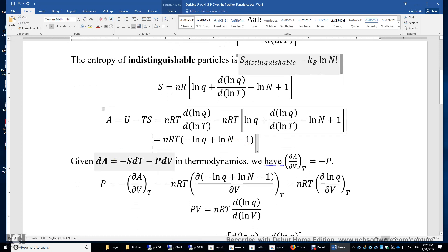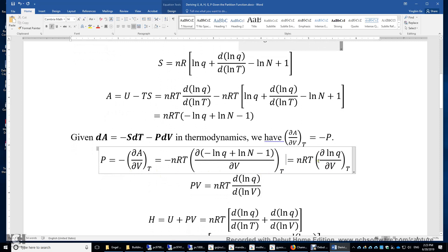Now we derive the pressure P of the system. Because dA equals negative SdT minus PdV solely from the definition of A and U and the exact differential form of U, we have delta A over delta V equals negative P when temperature is held constant. So we just plug in the expression of A here. And then P is equal to nRT times the first derivative of Lnq over dV. And again, for consistency and simplicity, we multiply both sides by V. And we have PV equals nRT times dLnq over dLnV.